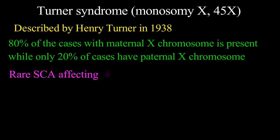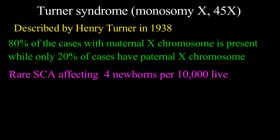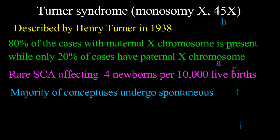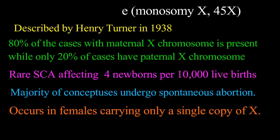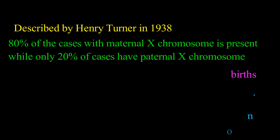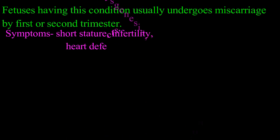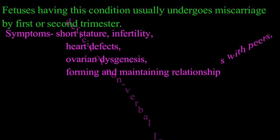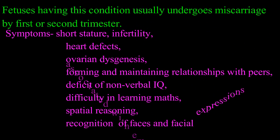It is a rare sex chromosome aneuploidy affecting 4 newborns per 10,000 live births. The majority of conceptuses undergo spontaneous abortion, occurring in females carrying only a single copy of X. Fetuses having this condition usually undergo miscarriages by the first or second trimester.